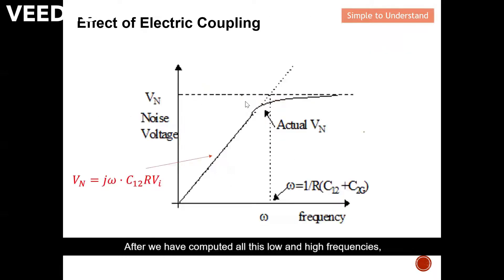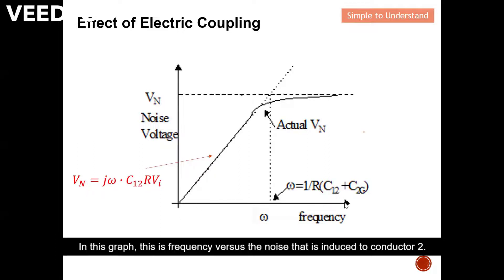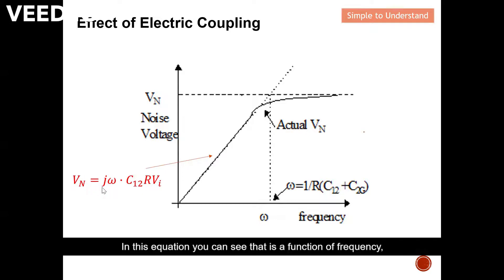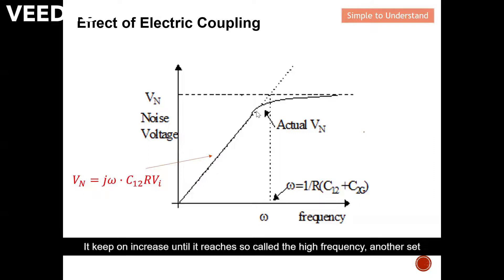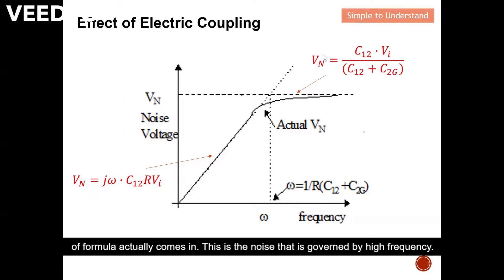Now we can draw a graph of frequency versus noise induced on conductor 2 to understand this better. Under low frequency (on the left side of the graph), the noise is governed by the low-frequency equation, which is a function of frequency. This means that as frequency increases, the noise voltage also increases in a linear fashion, and it keeps increasing until we reach the high frequency region.